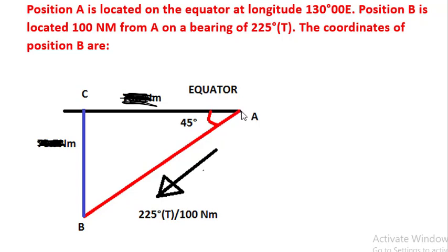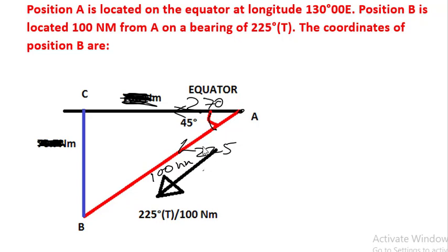Now let us look at this diagram, understand the question, and see what we have to find. Point A is located on the equator. The direction A to C is 270 degrees, and the bearing to B is 225 degrees, so the angle between them is 45 degrees. B is located at 100 nautical miles distance in the direction of 225 degrees from A. What we have to find is the latitude and longitude of B.